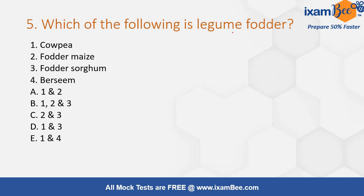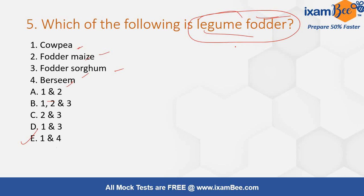Next question: which of the following is a legume fodder? Options are cow pea, fodder maize, fodder sorghum, and berseem, given in combinations. The correct answer is cow pea and berseem — option E — because fodder maize and fodder sorghum are fodder cereals, not legumes. The question asks for legume fodder, i.e., fodder belonging to the Leguminaceae family.